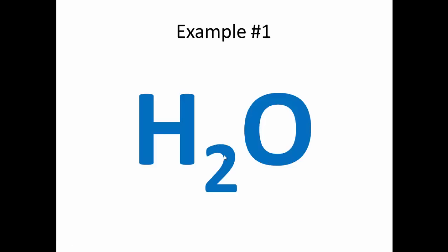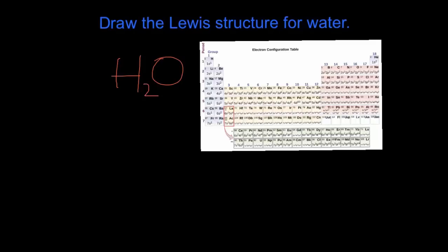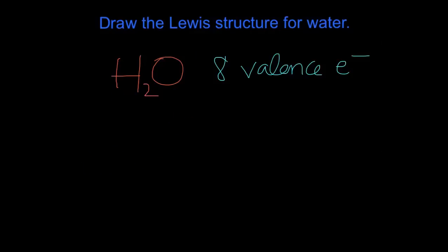So let's do an example. Draw the Lewis dot structure for water. The first step is to draw the molecular formula. The second step is to count the number of valence electrons. Oxygen is in the sixth group of the periodic table, so each oxygen has six electrons. Hydrogen is in the first group, so each hydrogen has one electron. That means we have a total of eight valence electrons.